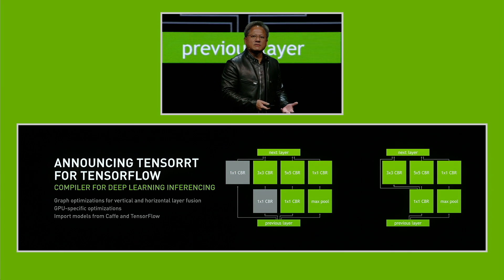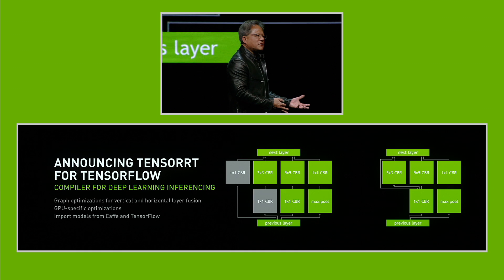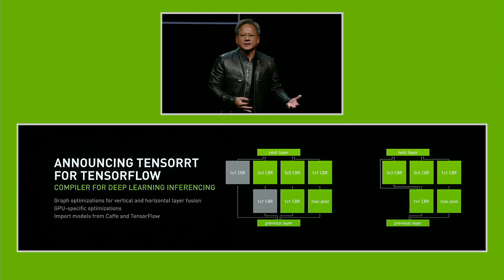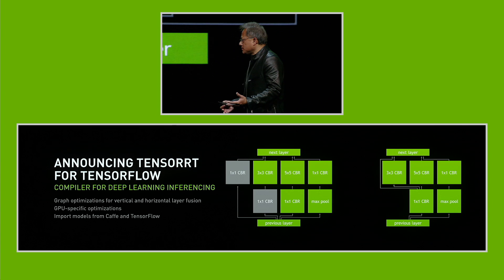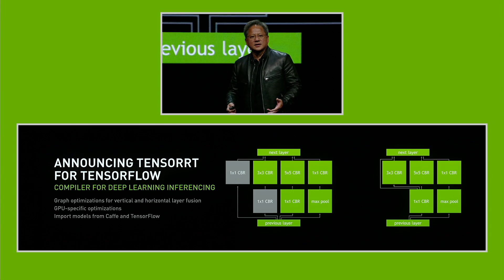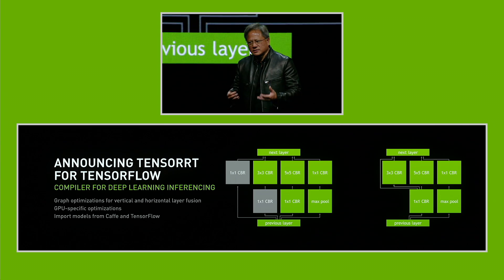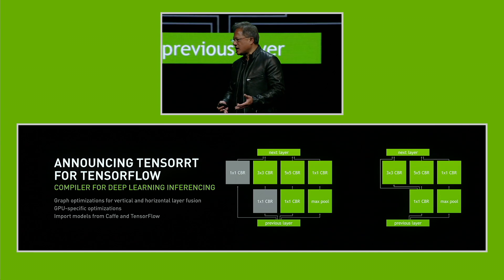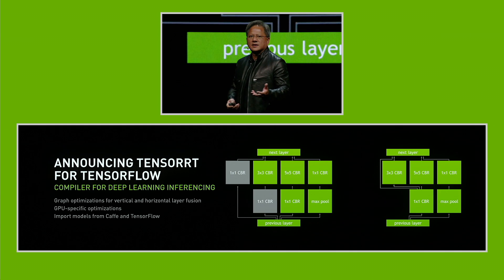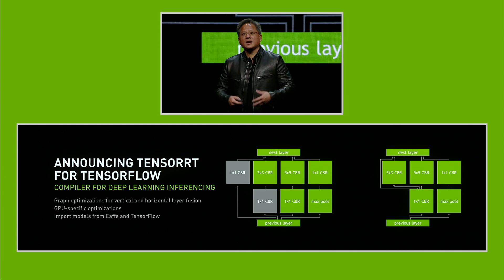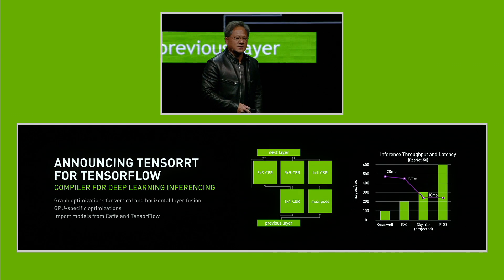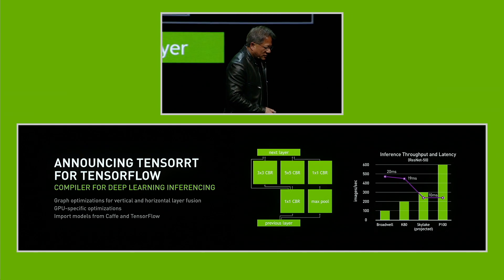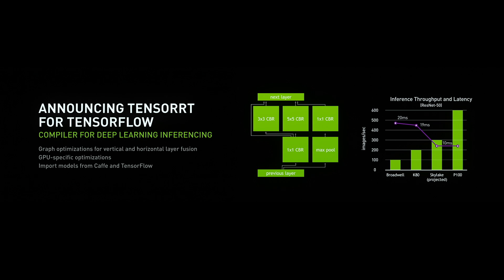The second thing we can do is recognize when different mathematical blocks share the same inputs — they have different outputs but they share the same inputs. That is achieved through graph analytics. So we can walk through the graph, analyze it, recognize these different opportunities and share them. The third thing, of course, is to compile it down to the precision of the target GPU.